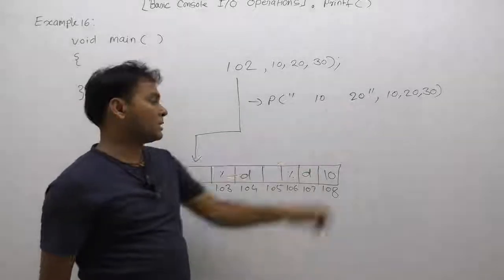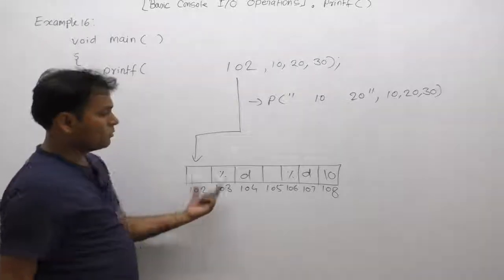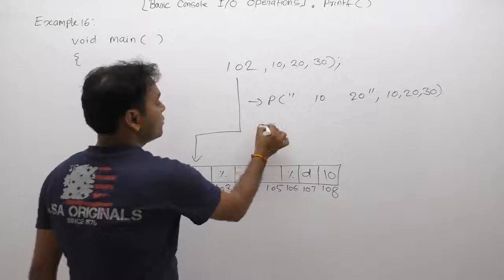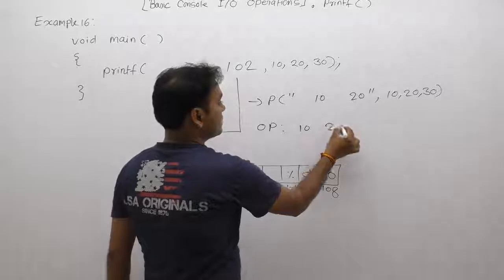Therefore, the final result is: space 10 space 20, because logically we consider this from location 102 onwards. The output of this printf is space 10 space 20.